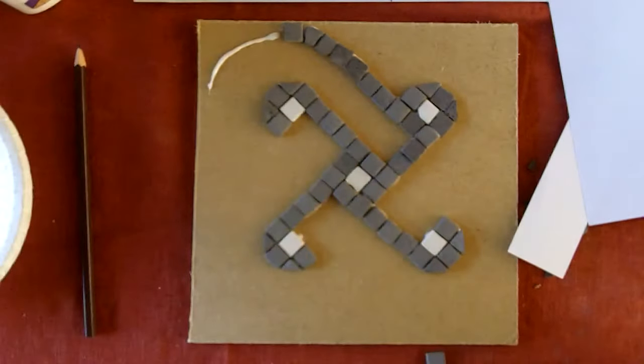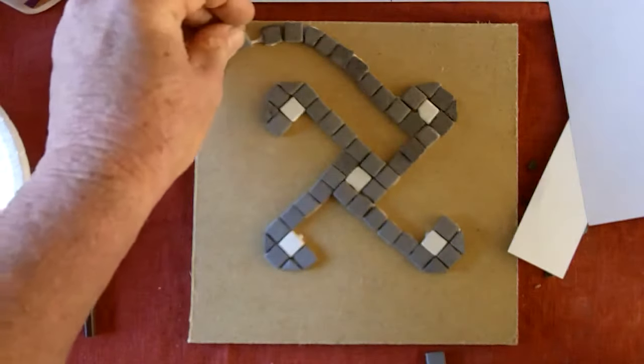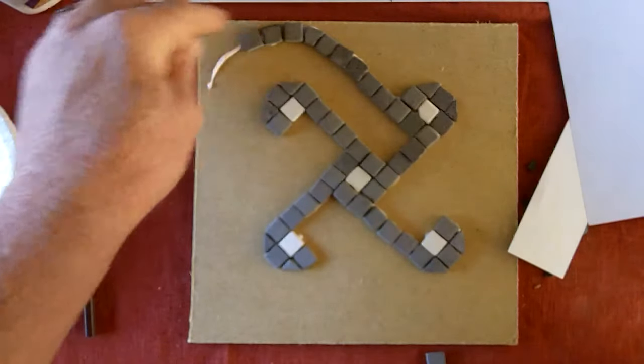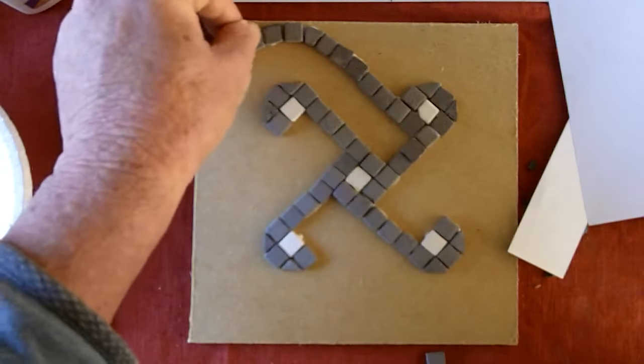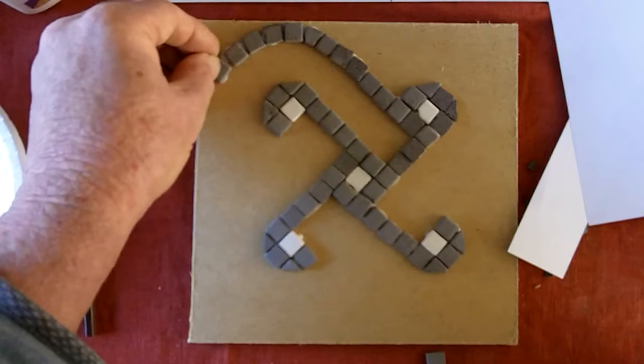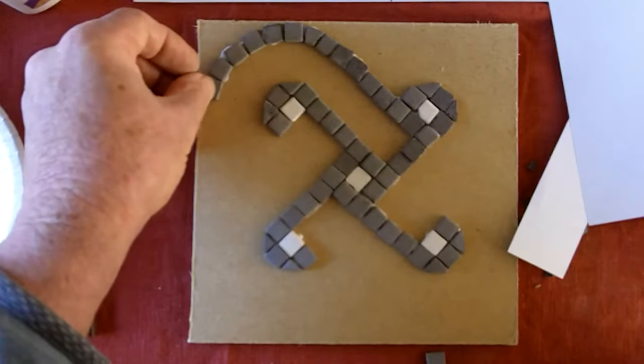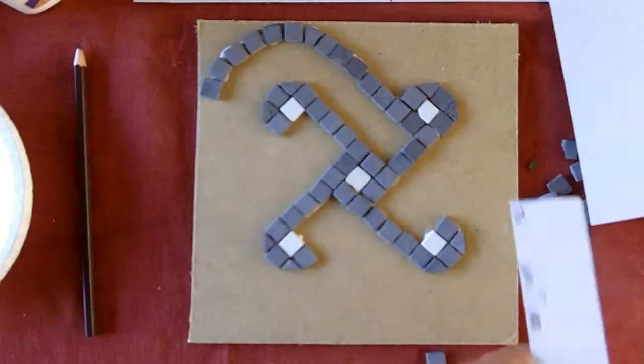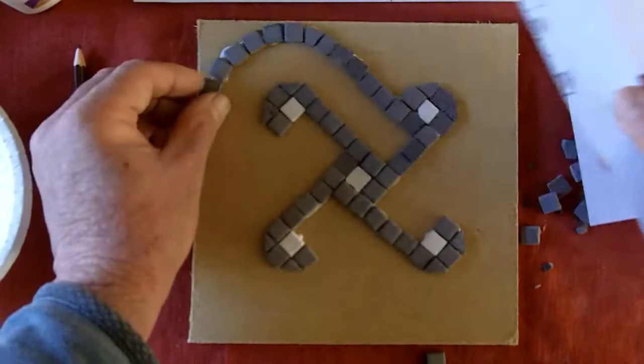Doesn't matter if you are coming in on the side. The edge doesn't matter, it is this line here. Just up to about there. Again, you can use your staff and you can see you have got a two tesseri gap.